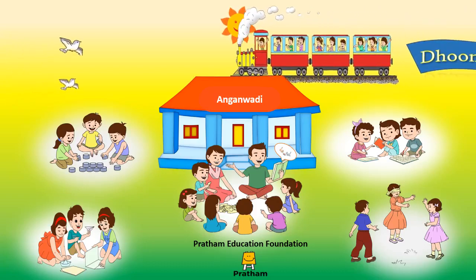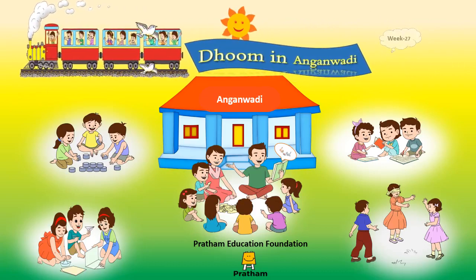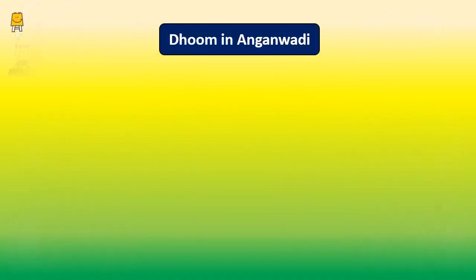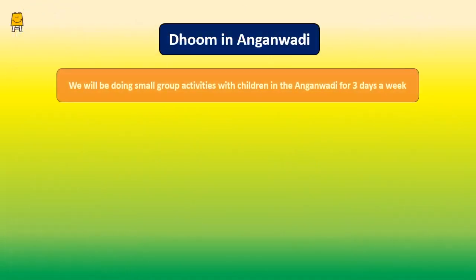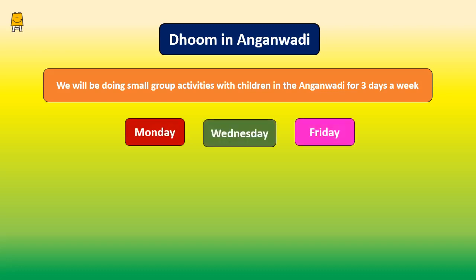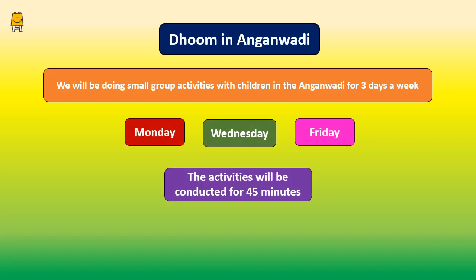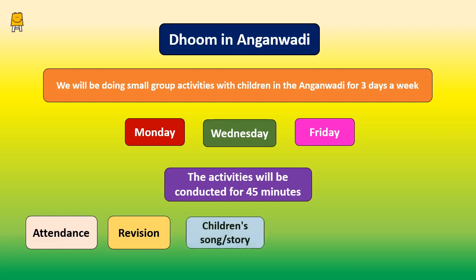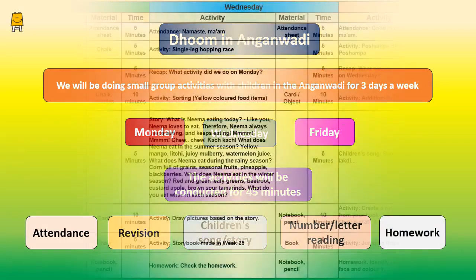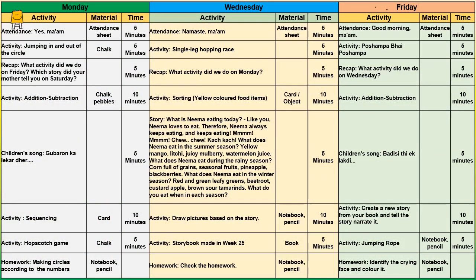Dhoom in Aanganwadi. We will be conducting small group activities with the children at Aanganwadi thrice a week on Monday, Wednesday and Friday. Each day there will be 45 minutes of activities including attendance, revision, children's songs or stories, reading numbers and letters and homework. Now let's learn about the activities we are going to conduct with the children thrice a week.